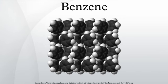Michael Faraday first isolated and identified benzene in 1825 from the oily residue derived from the production of illuminating gas, giving it the name bicarburet of hydrogen. In 1833, Eilhard Mitscherlich produced it via the distillation of benzoic acid and lime, and gave the compound the name benzene. In 1836, the French chemist Auguste Laurent named the substance phène. This is the root of the word phenol, which is hydroxylated benzene, and phenyl, which is the radical formed by abstraction of a hydrogen atom from benzene.